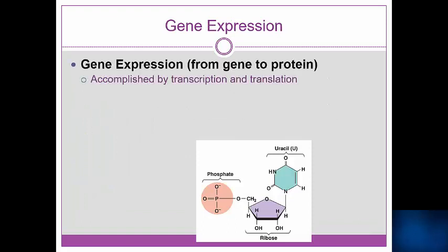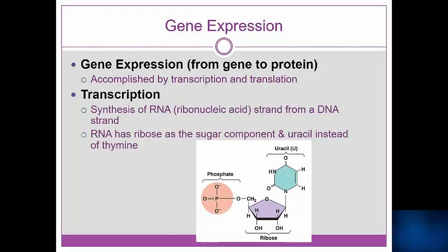Gene expression can be summarized as the process by which we get from gene to protein. There are two main components to this process: transcription and translation. We will focus first on transcription. Transcription makes an RNA copy, or transcript, of a gene found on DNA.